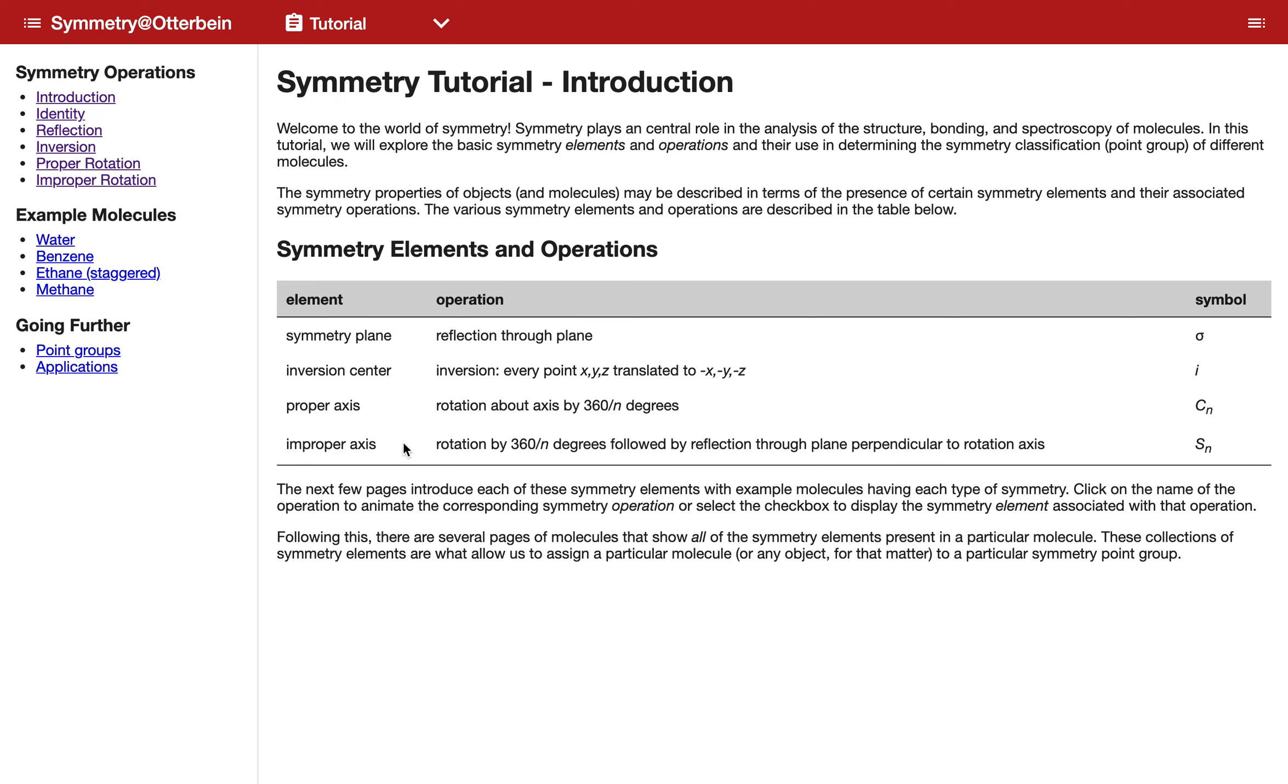The proper axis of course is the simple rotation, while the improper axis is a rotation followed by reflection through a plane perpendicular to that axis. You can see over here on the far right-hand side the symbols that are associated with these different symmetry elements and operations.